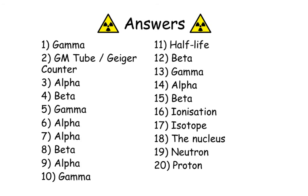Number 16: Ionization. Number 17: Isotope. Number 18: The Nucleus. Number 19: Neutron. And number 20: Proton.